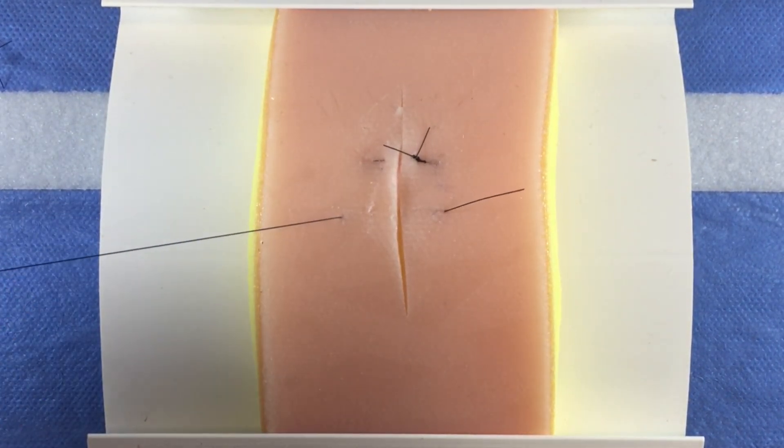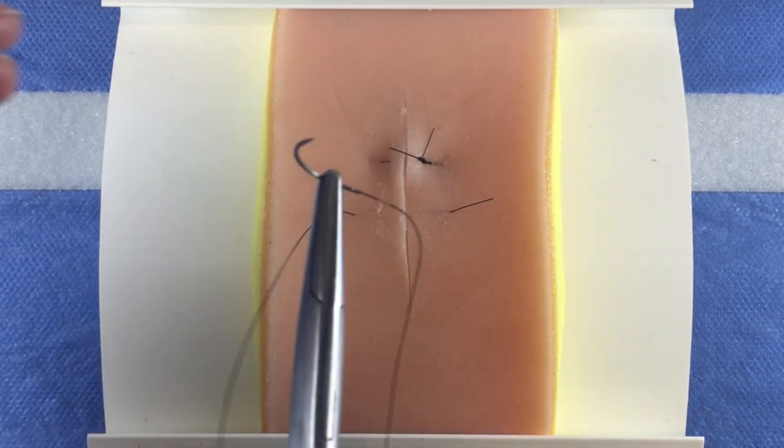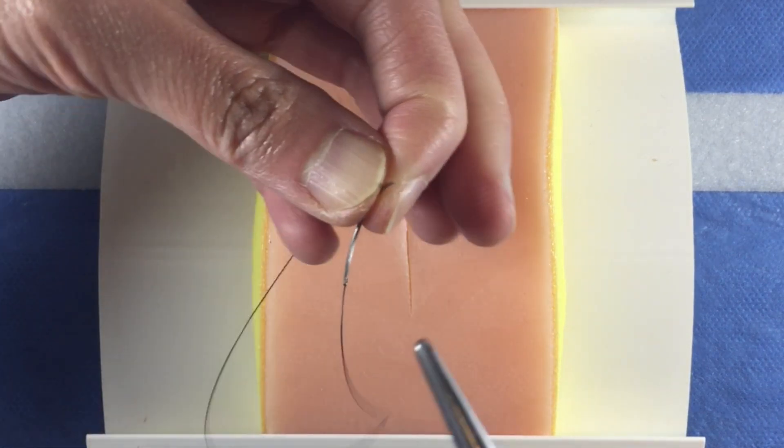Next, place a superficial bite in the same vertical plane as the deep one so that it is directly on top of the deep bite.